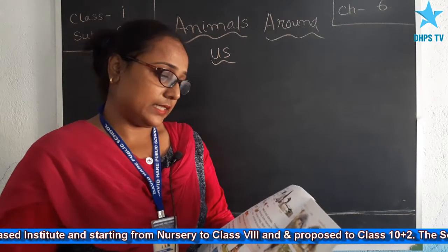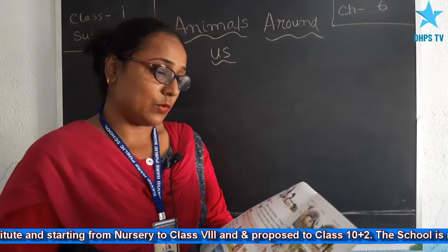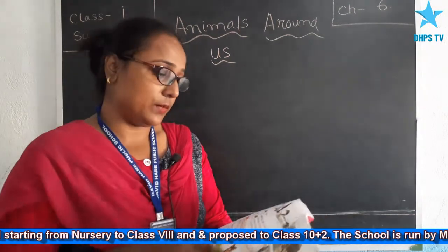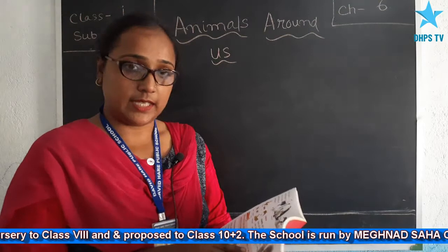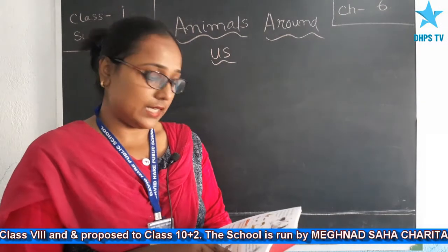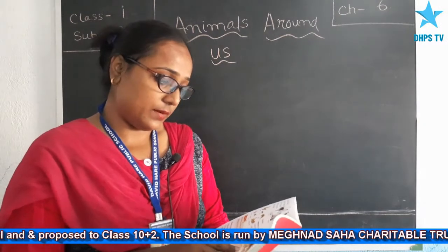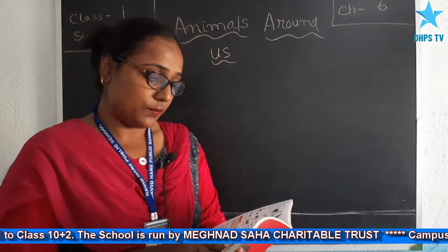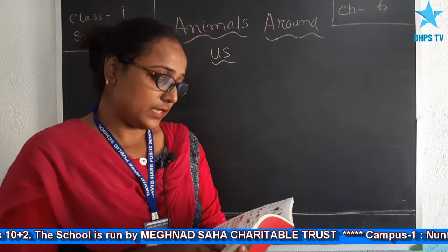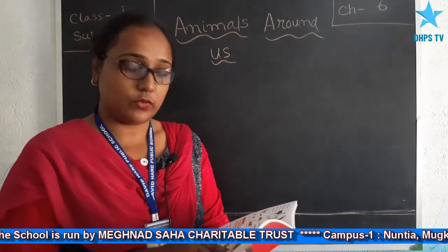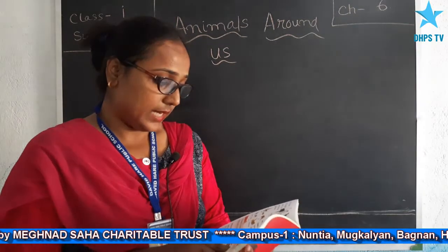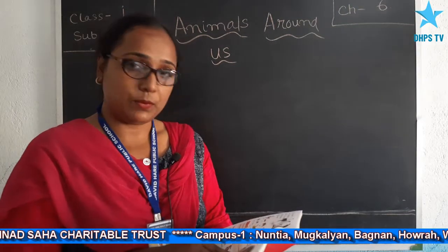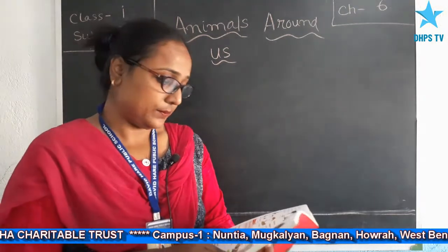Insects are small animals. They have six legs. Some insects have two pairs of wings, and most insects can fly with the help of their wings.